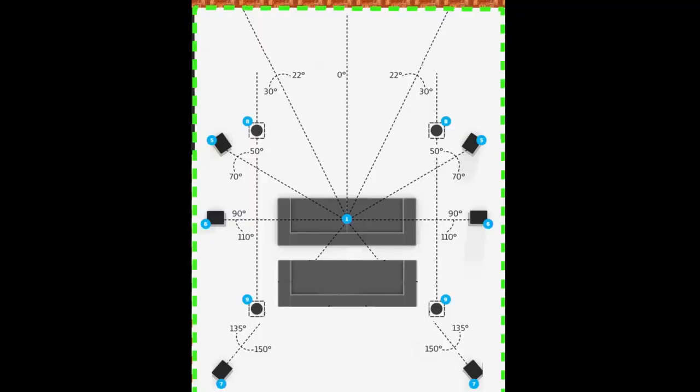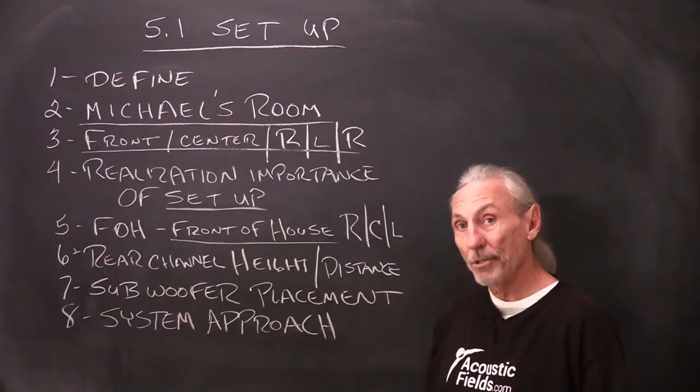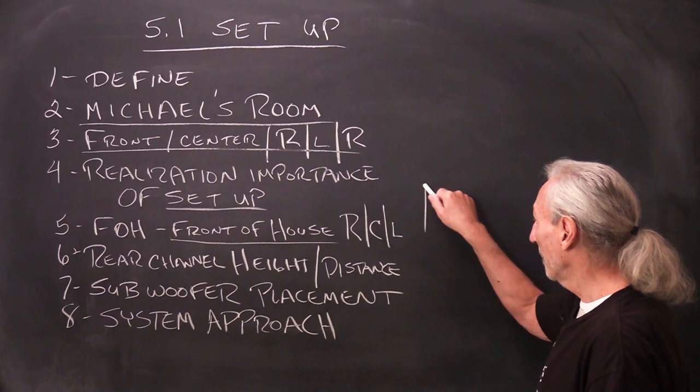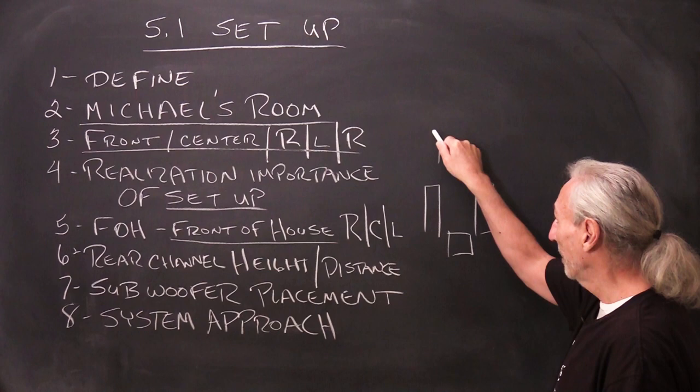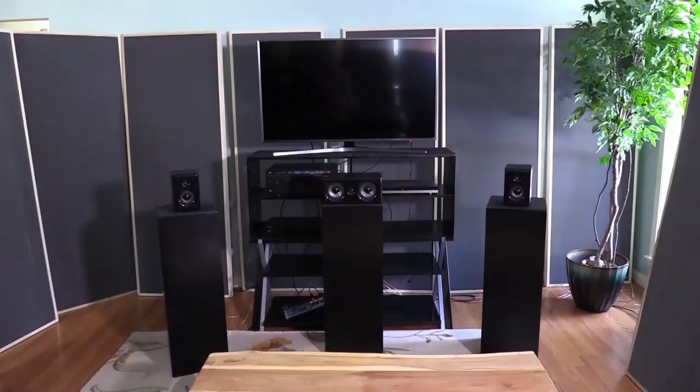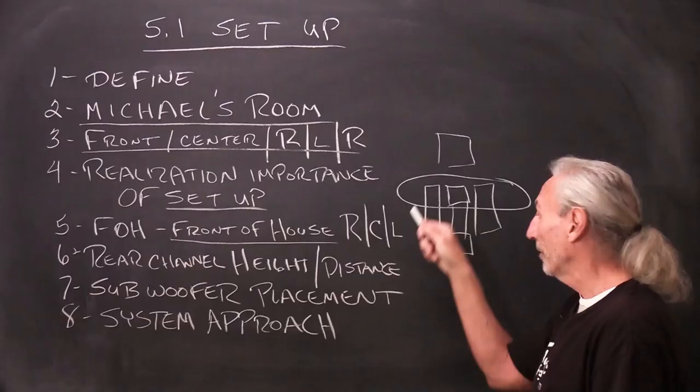Let's talk about front of the house. We'll borrow a term from the live music industry. So the front of the house is our left channel, our center channel, and our right channel. Those three channels have to be in the same sound field. So if we have a speaker here and a speaker here, a lot of times the center channel's down here. I've seen it up here. I've seen it in places I don't even want to talk about. So the bottom line here is, it's got to be in the same sound field. That's it.